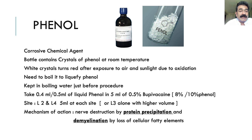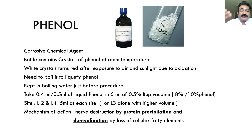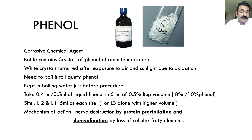Phenol comes in an amber-colored bottle — a corrosive chemical agent stored away from sunlight and air to prevent oxidation, which would reduce its potency. I usually place 5 ml phenol at L2 and L4. Some pain physicians prefer L3 along with L2, or a single L3 level with a larger volume. The mechanism of action involves protein precipitation and demyelination of the nerves, effectively destroying the nerve and ganglion.